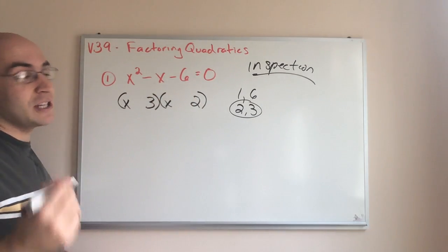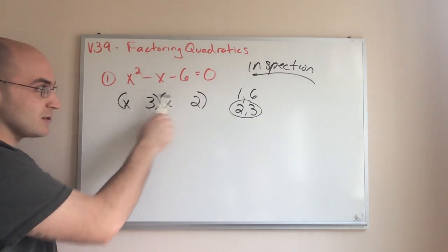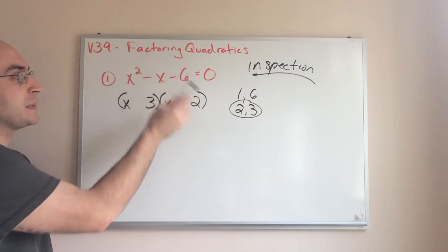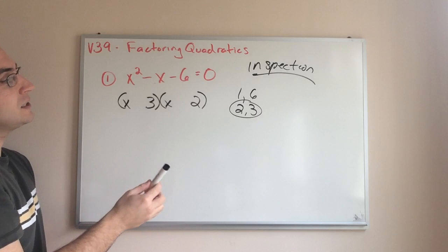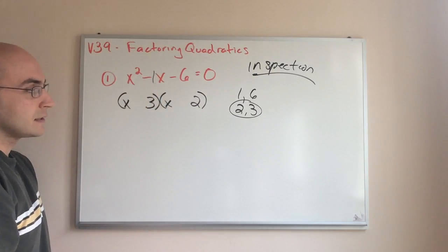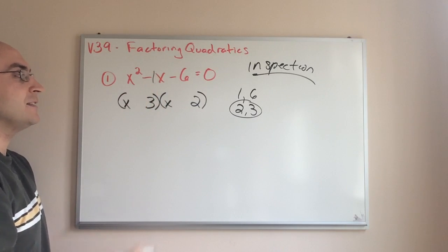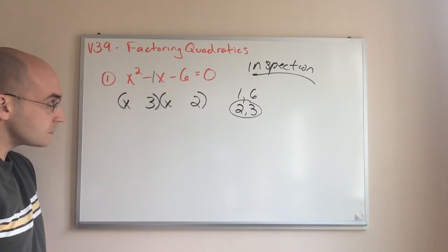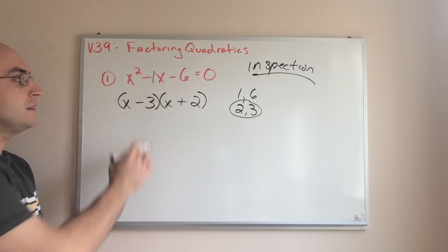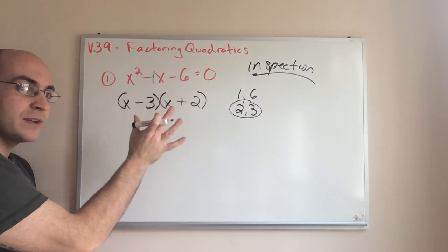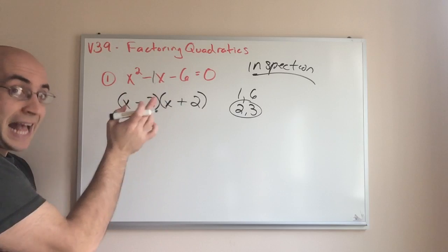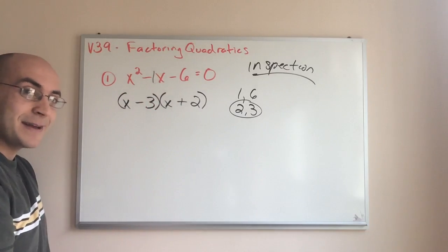Now, the tricky part or the trickier part is I need to make sure that adding or subtracting makes sense here. Okay. So, I have to get a negative six, but I also have to have a negative one. So, I know that one of these has to be a plus and one of these has to be a minus. Okay. Because this is a negative one here, I need these terms to be plus or minus. So, let's say I did this. Negative three times two is negative six. So, we're good there. But I have to get these to add up to be negative one. So, negative three and two, when I add them, it will be negative one. So, that's the inspection method.